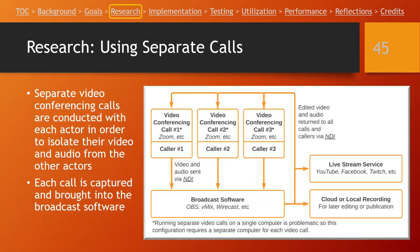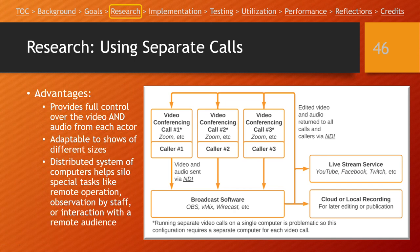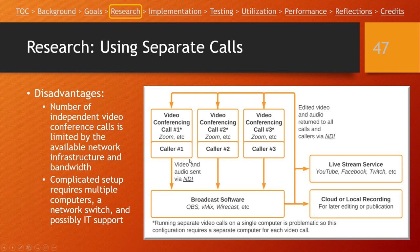A way to get maximum control is to separate callers into separate video conferencing calls. In this approach, each participant is no longer in the same Zoom meeting — they are each in their own Zoom meeting — which gives maximum control over both their video and audio. This is another way the system can be set up. There are great advantages to this, as well as some disadvantages, like a more complicated setup and it uses a lot of network data in order to transmit all the information.